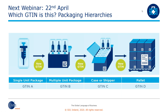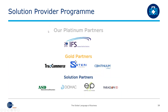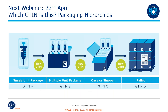We're nearly at the end of today's webinar — trying to keep it to 15 minutes. Hopefully you have found it useful. Our next webinar is planned for the 22nd of April and the topic is 'Which GTIN is this?' — trying to understand packaging hierarchies, units of measure, and managing order quantities. We would also like to hear from you if you'd like any other topics covered. The webinar is recorded so you can listen back and feel free to share with colleagues and peers.